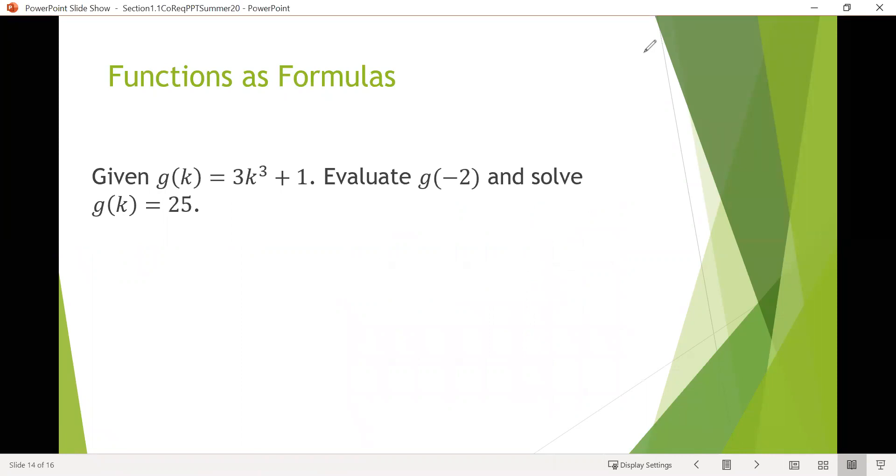Our final representation of functions would be functions as formulas or formulas as functions. Here we're given this function g of k equals 3k cubed plus 1. Notice here our inputs, those are going to be the k's, so values for k will be our input. And then we get outputs by using this formula. Since they didn't give us specifically an output variable, we know that our g's then are our output. We're asked to find g of negative 2 and solve g of k equals 25.